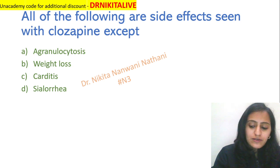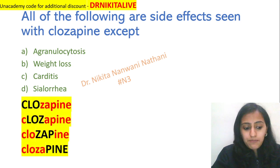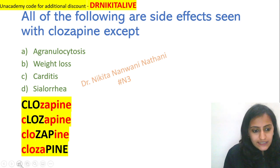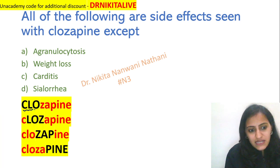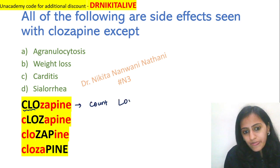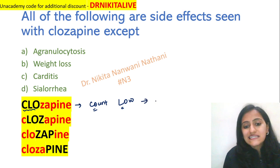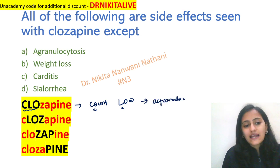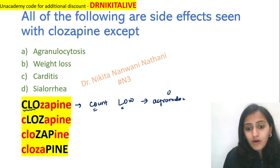An easy trick to remember Clozapine side effects is to just decode the term Clozapine — the spelling itself helps us remember. So, the first three letters C-L-O mean 'counts low.' That means it causes agranulocytosis — very, very important and a frequently asked question.